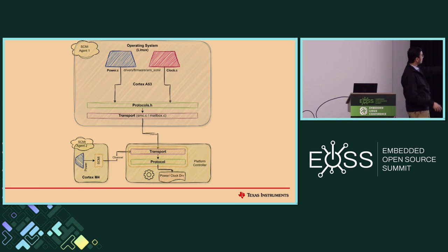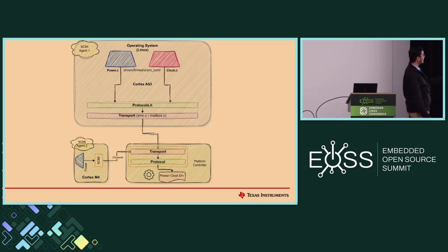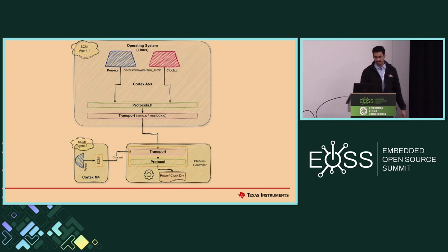One small entity on the bottom left is the Cortex-M4. We covered the Linux part, but what will a general-purpose MCU do in such a system? It can also implement this SCMI protocol inside its firmware, and using that plus a channel to communicate with the SCP firmware, it can also request for clock or power.